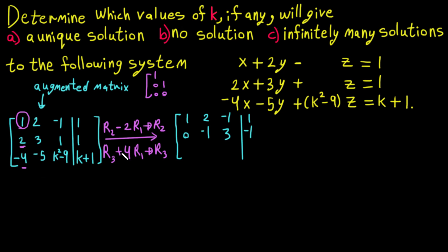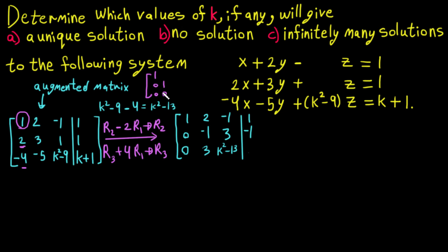For new R3: negative 4 plus 4 times 1 is 0; negative 5 plus 4 times 2 is 3; then K squared minus 9 plus 4 times negative 1 gives K squared minus 13. And for the last entry: K plus 1 plus 4 times 1 is 4, so K plus 1 plus 4 equals K plus 5.